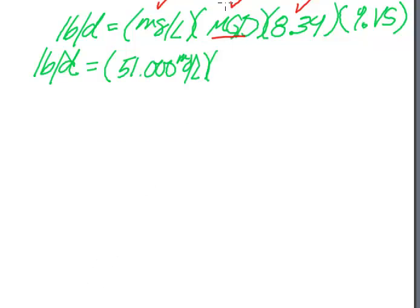MGD we found. They gave us gallons per minute, but we knew we needed MGD, so we converted that. So this is 0.04032. We've got 8.34. That's my conversion factor, pounds per gallon.